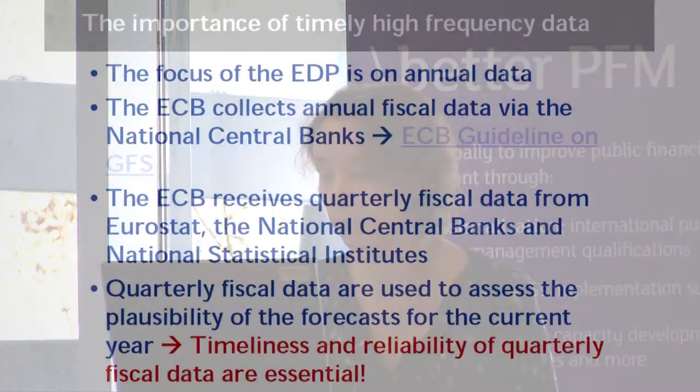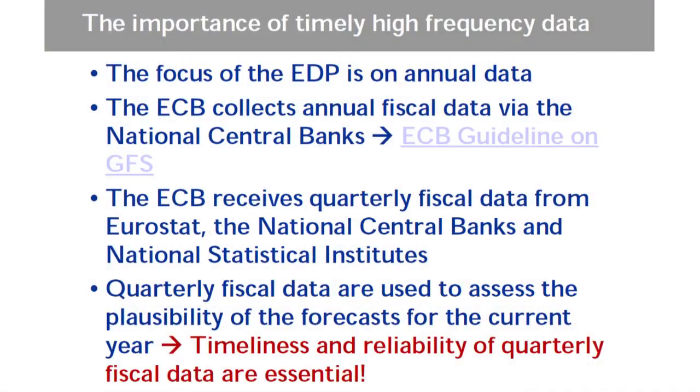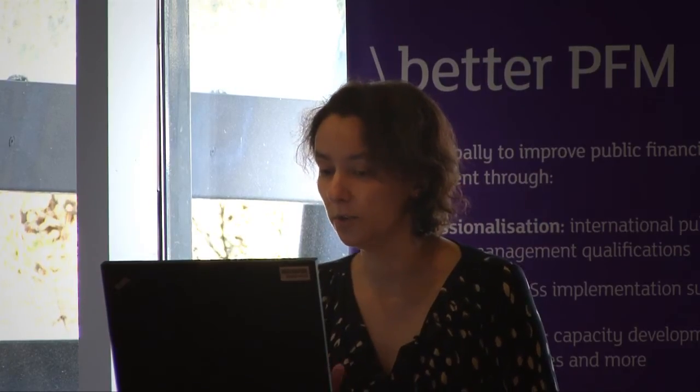In the course of time the focus has shifted more and more to quarterly fiscal data. Currently we receive quarterly revenue, expenditure, and deficit data from Eurostat, and we receive quarterly financial accounts and quarterly debt data from the national central banks and national statistical institutes. These quarterly fiscal data have become particularly important to assess the plausibility of forecasts for the current year and also to assess whether targets for programme countries can be met. From our point of view, it is very important that these quarterly fiscal data are delivered on a timely basis and that they are reliable — not subject to frequent revisions.